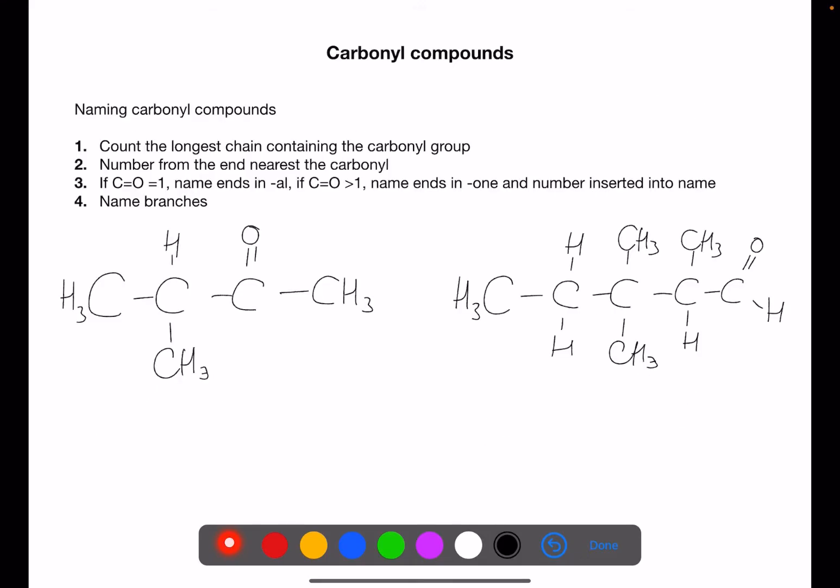For naming carbonyl compounds it's very similar to the other naming you've looked at before. The first step is always to count the longest chain which contains the carbonyl group. Number from the end closest to the carbonyl even if that's from the right hand side. If the carbonyl is on carbon 1 the name will end in -al. If the carbonyl is a number greater than 1 it's going to end in -one and you put the number into the name, just like with an alkene where you say where the double bond is. Then name your branches at the start using di- and tri- if needed, listed alphabetically.